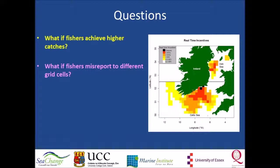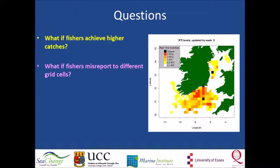The second question asks what the consequences would be if fishers report their catches to other grid cells than where they were caught. This question arises from the feature that we envisaged that the tariffs would be updated based on real-time information, for example at a weekly timescale. CPUE information from the industry would be used for this, which of course provides an incentive for misreporting.